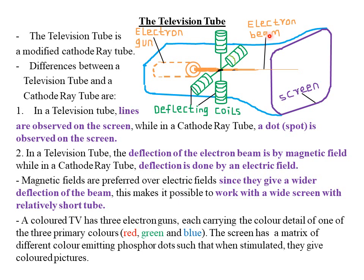The main differences between a cathode ray tube and a television tube are: first, in a television tube, lines are observed on the screen, whereas for a cathode ray tube, dots or a spot are observed on the screen. Second, in a television tube, deflection of the electron beam is by magnetic field — because the deflecting coils create a magnetic field — while in a cathode ray tube, deflection is by electric field from the X and Y plates.